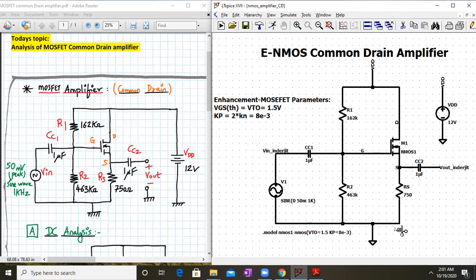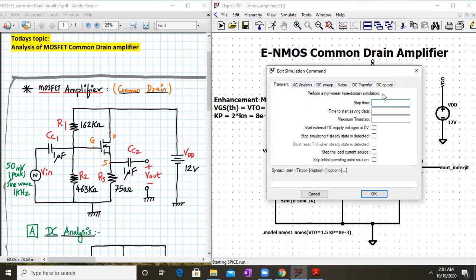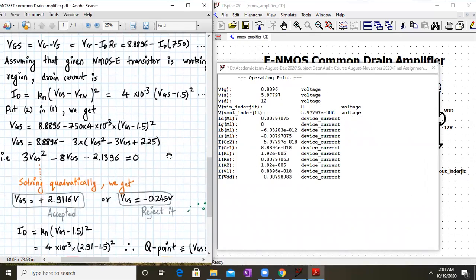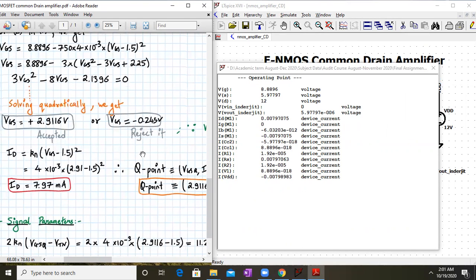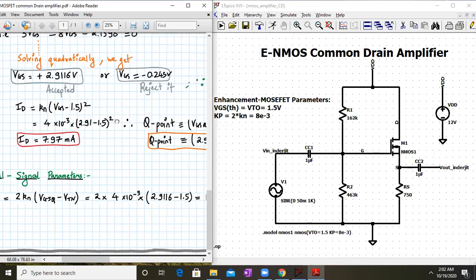I'll start with a DC operating point simulation to gain confidence in the LTSpice results. The Vgs value is 8.88 minus 5.977, which gives approximately 2.9 volts - very close to our calculated value. The Id value is coming out to 7.97 milliamperes, matching our theoretical Idq value.